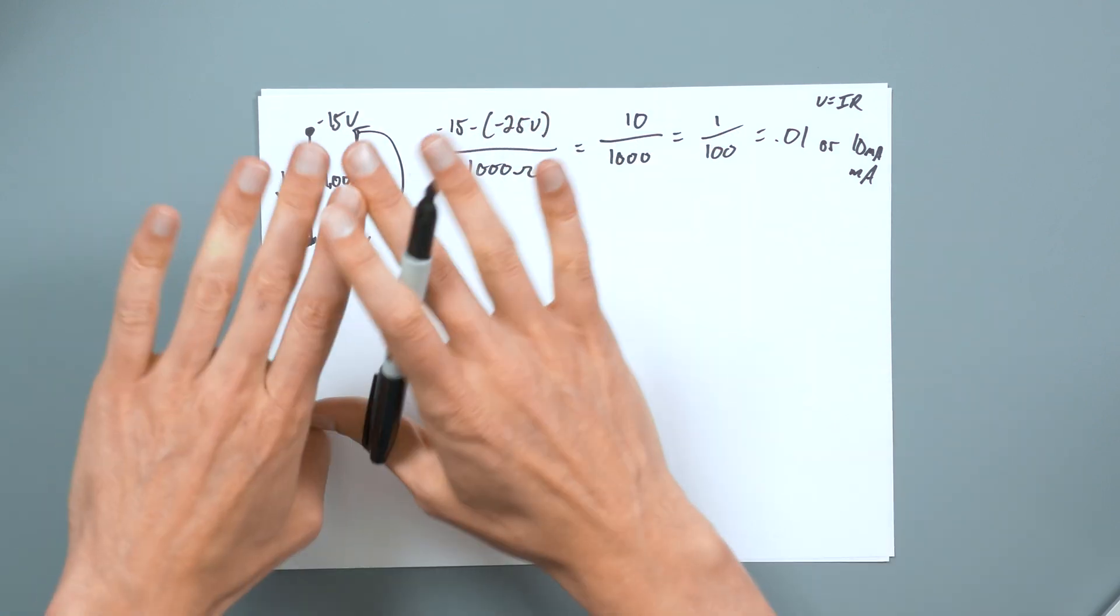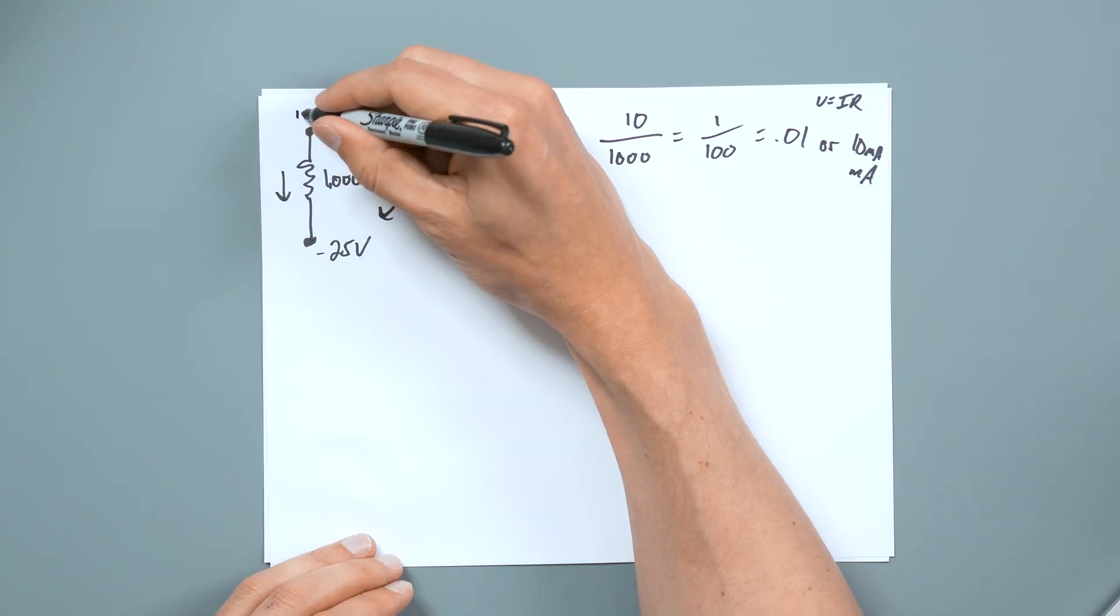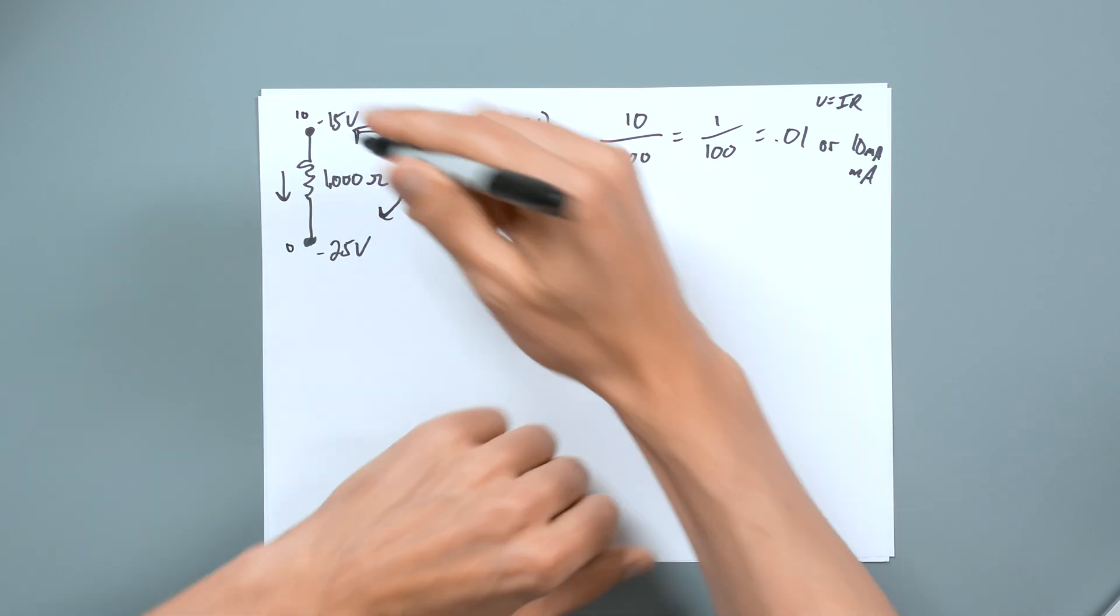Again, you could go and have 10 and zero, and it acts the exact same way. Now, if this were part of a bigger circuit, then of course, it makes a huge difference. But negative voltages in general, just mean that they're on the different side of an arbitrarily decided zero.